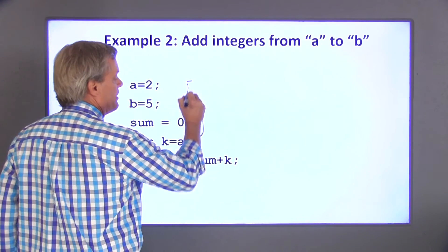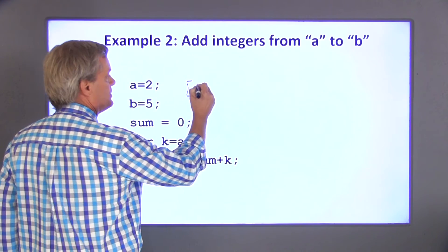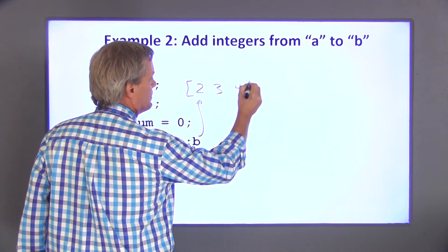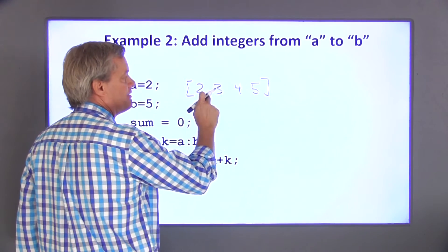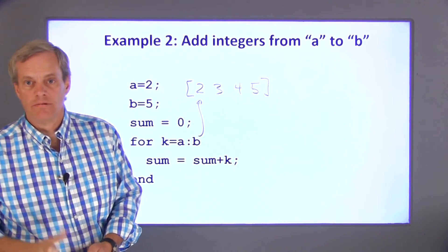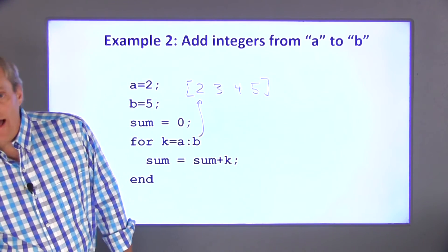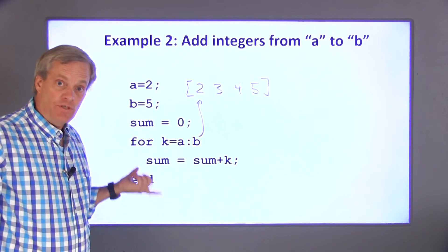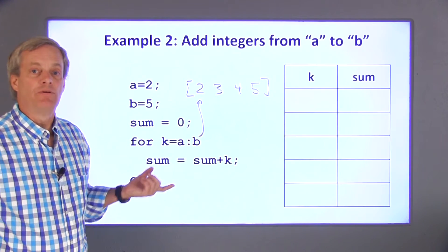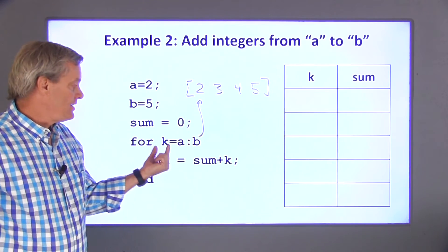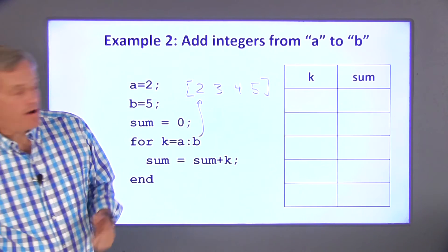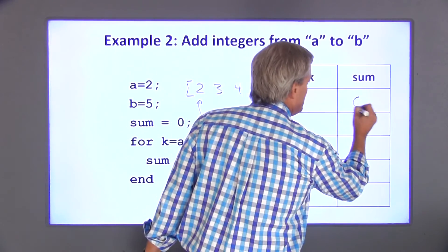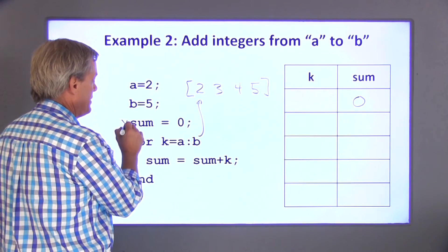This notation sets an array, which for our numbers is 2, 3, 4, and 5. It starts at the value for a, ends at the value for b, and counts by ones. Now, to keep track of what the for loop itself is doing, I'll set up another table. The only values I need to keep track of are k and sum. Before the loop starts, the value of sum is 0. It's initialized right here.